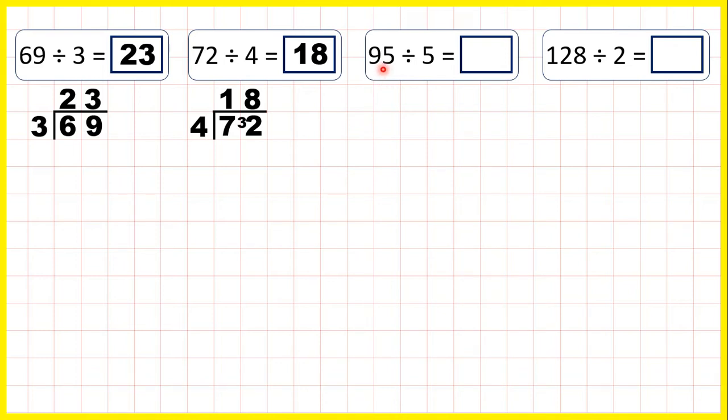Now 95 divided by 5. Again, we can set this out as a short division, and start by dividing the first digit, so dividing 9 by 5. There needs to be a 1 in our answer line, because 1 times 5 is 5, but then we need 4 more to get to 9.